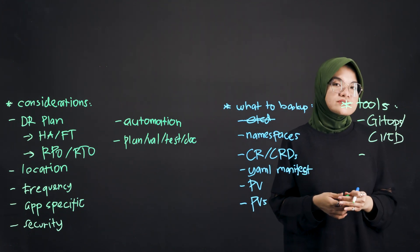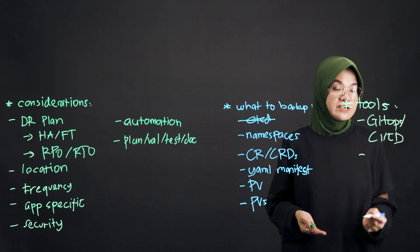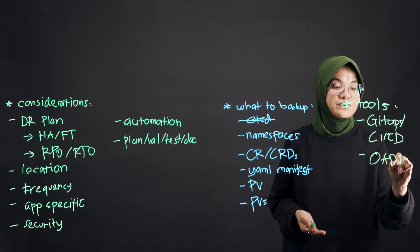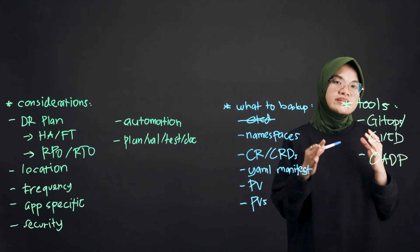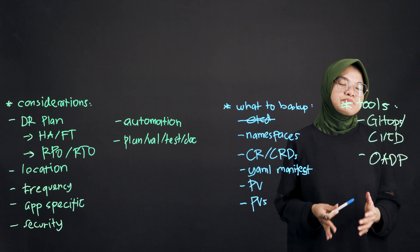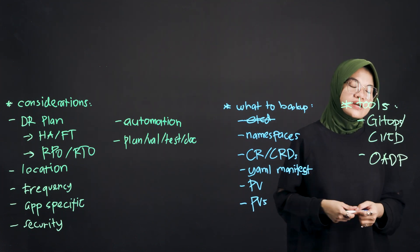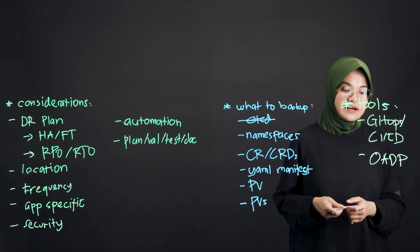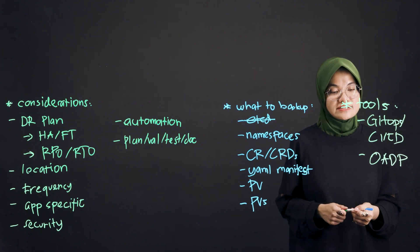Another tooling option we have here at Red Hat is what we call OpenShift API for Data Protection, or OADP. It's essentially an operator that provides the API to help you with your backup and restore processes, and it also comprises Velero plugins as well.